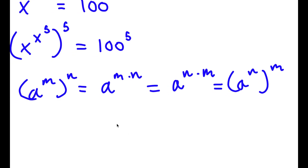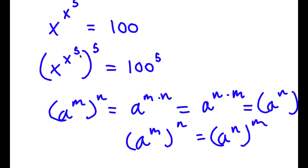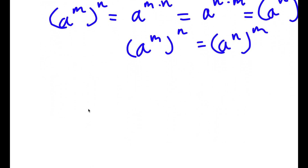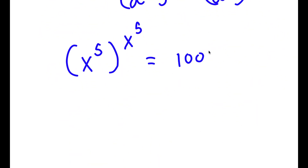So in simpler terms, a to the power of m to the power of n is equal to a to the power of n to the power of m. So in this case, I have x to the power of x to the power of 5, all to the power of 5. I can think of x to the power of 5 as m, and 5 as n. So if I switch these two, I get x to the power of 5 to the power of x to the power of 5, which is equal to 100 to the power of 5.